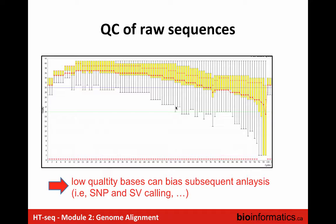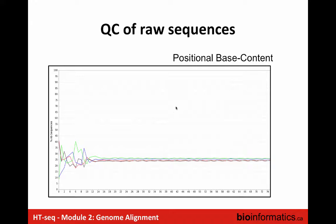Another QC metric is the positional base content, showing the distribution of A, T, G, and C across all read positions. For a human DNA sample you'd expect roughly 50% of each base. RNA-seq data shows a specific non-random pattern in the first 12 bases due to how Illumina generates RNA-seq data, but this is normal. For DNA, you'd expect GC content around 30% and AT around 20%, since most genomes don't have equal GC and AT content.